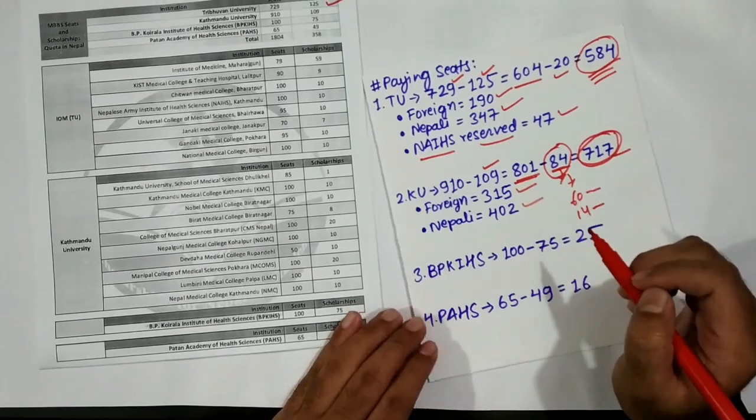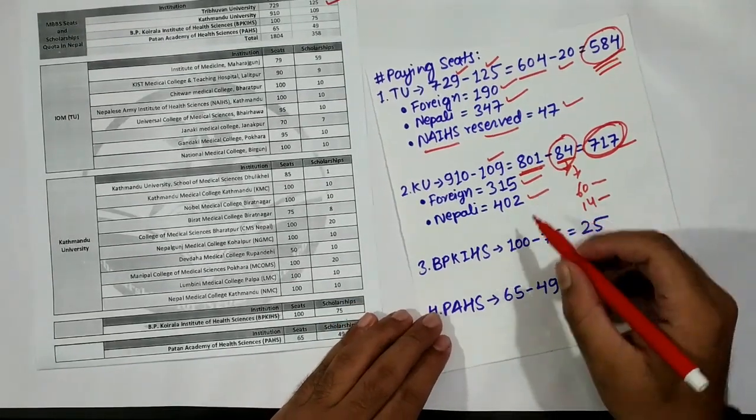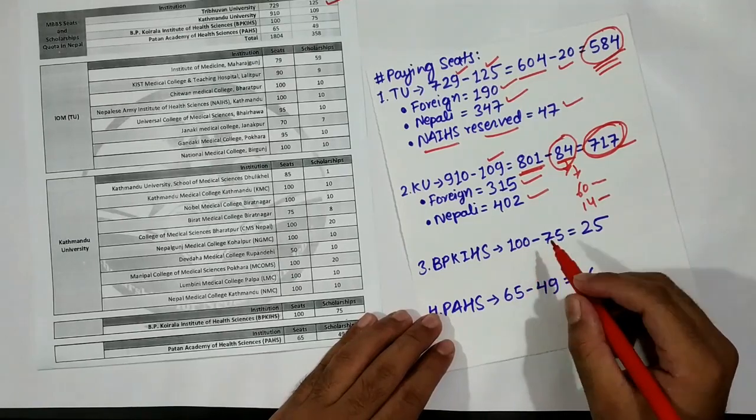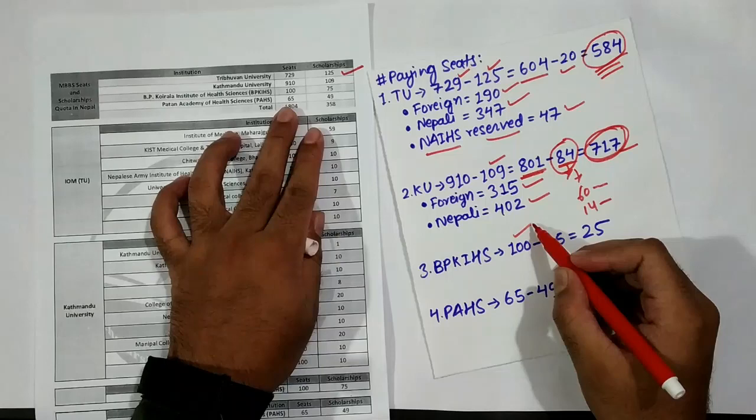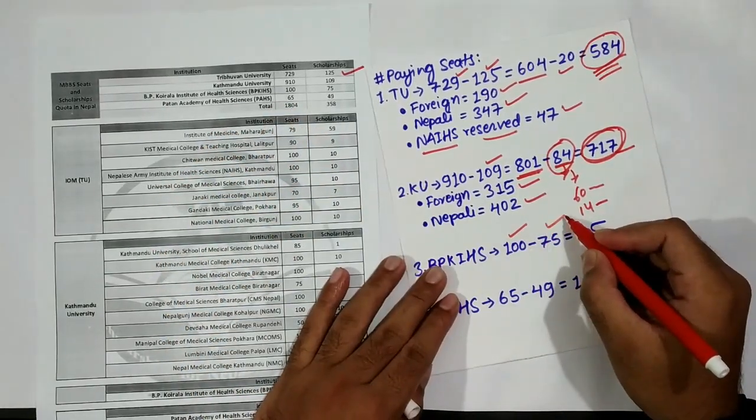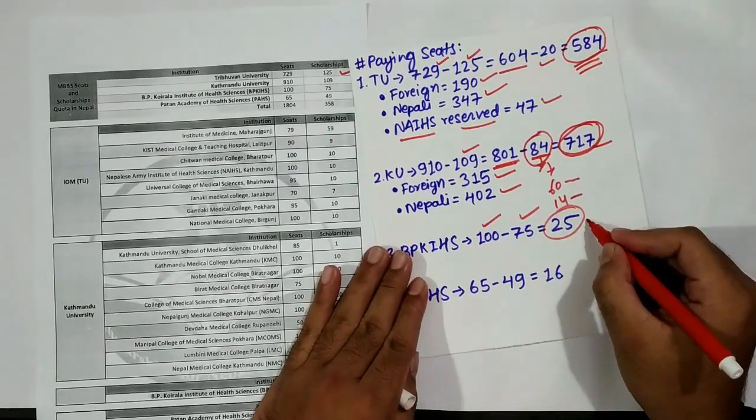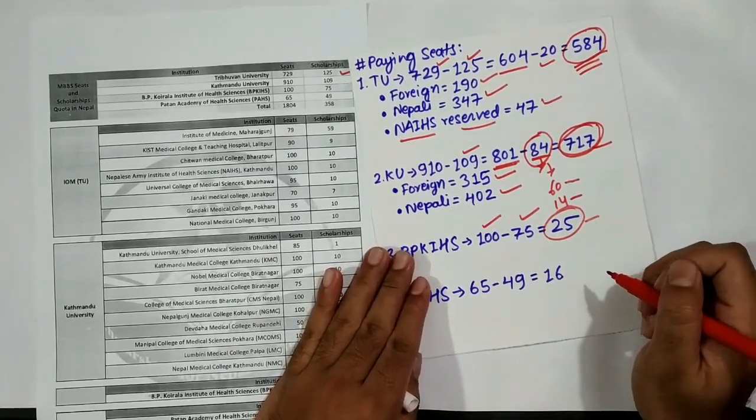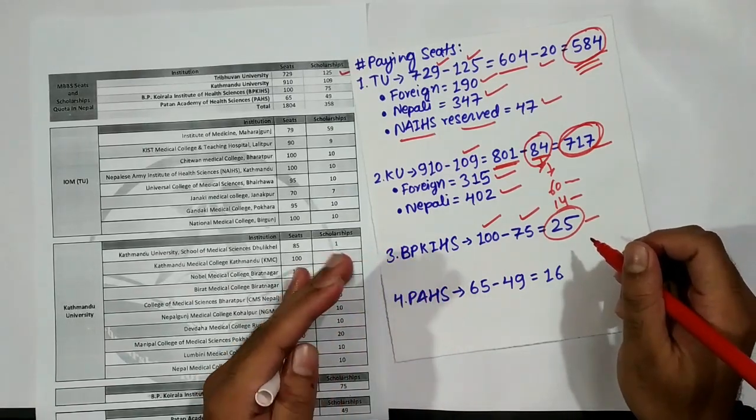Moving forward to BPKHS, 100 seats have been allocated in full, of which 75 seats are for scholarship and the remaining 25 seats will be under the paying category.